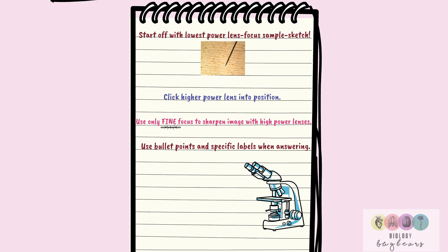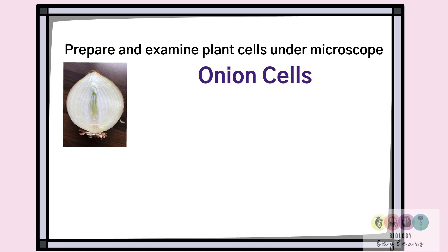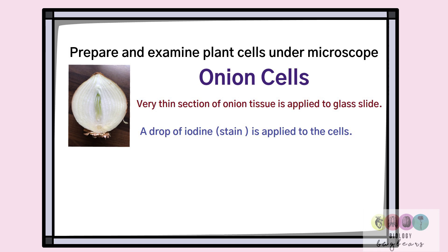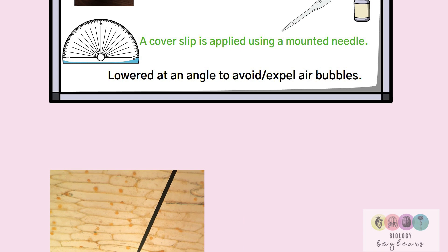Another part of the practical was to prepare and examine plant cells under the microscope — we chose onion cells. A very thin section of onion tissue is applied to a glass slide. A drop of iodine, which is the stain, is applied to the cells using a pipette. A cover slip is applied using a mounted needle, and the cover slip is lowered at an angle to avoid or expel air bubbles. The slides are then prepared and we view the onion cells under the light microscope.